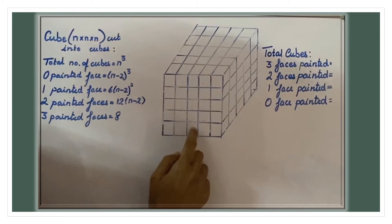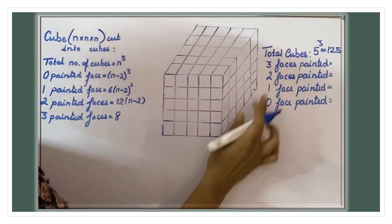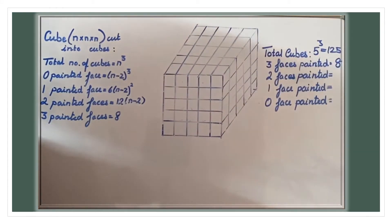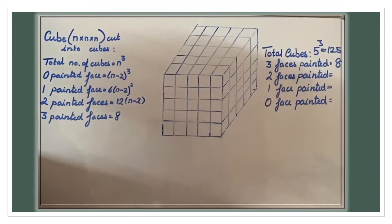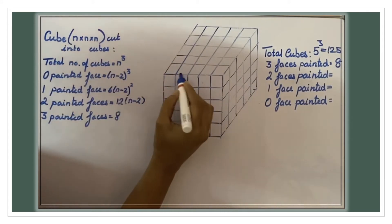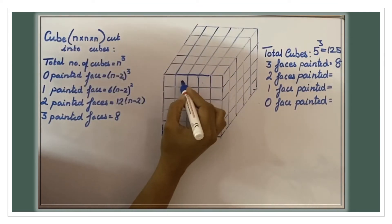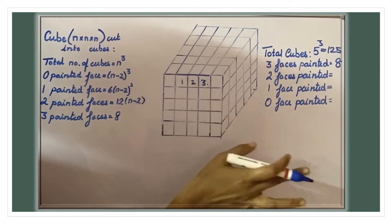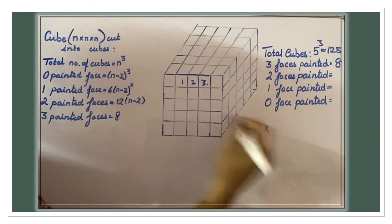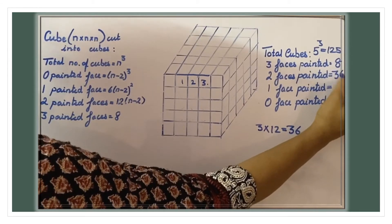Now for a five by five by five cube: n is five, so five cubed is 125 smaller cubes. Eight smaller cubes are three faces painted — this remains the same. For two-face-painted cubes, check one edge: three cubes per edge are two faces painted. Three into twelve edges equals thirty-six smaller cubes are two faces painted.